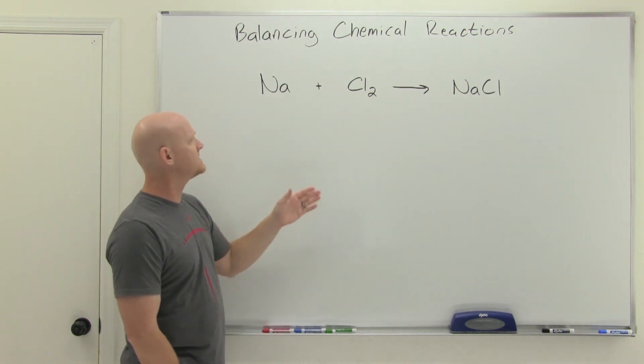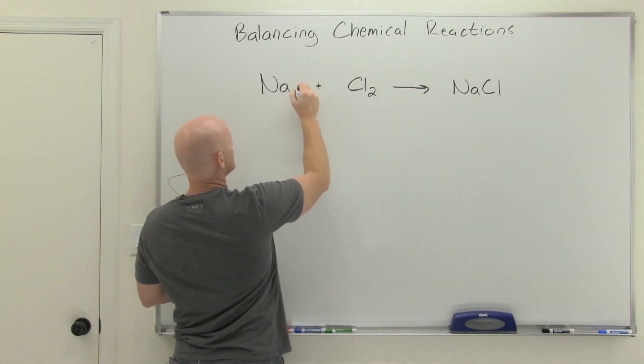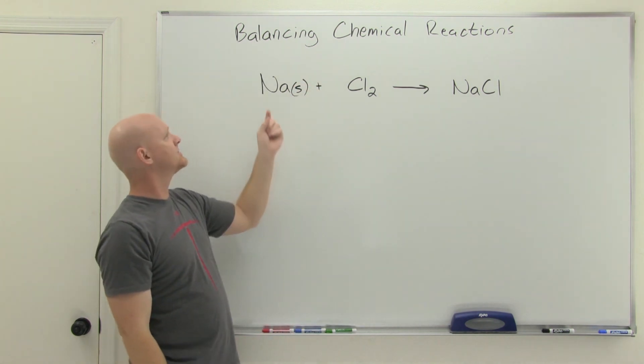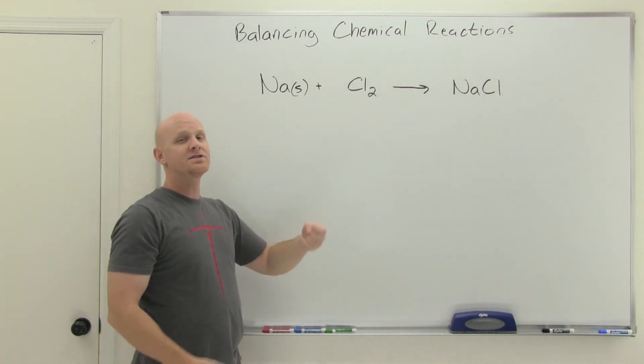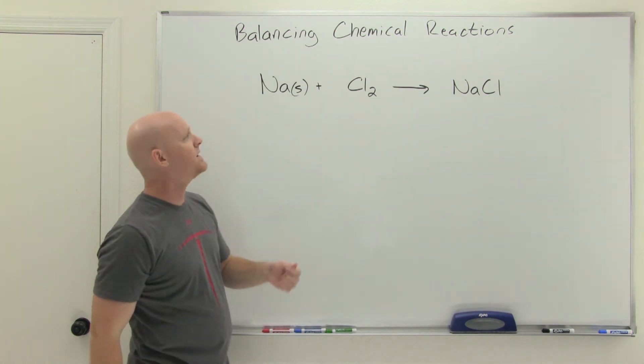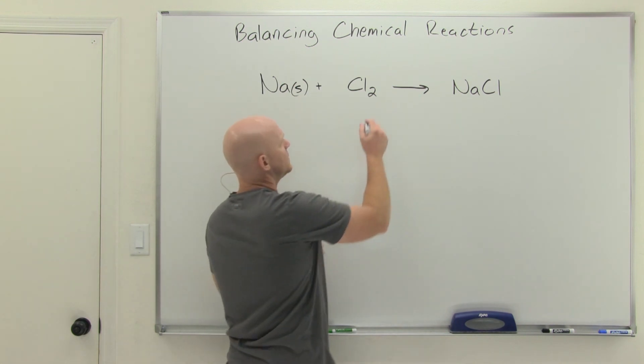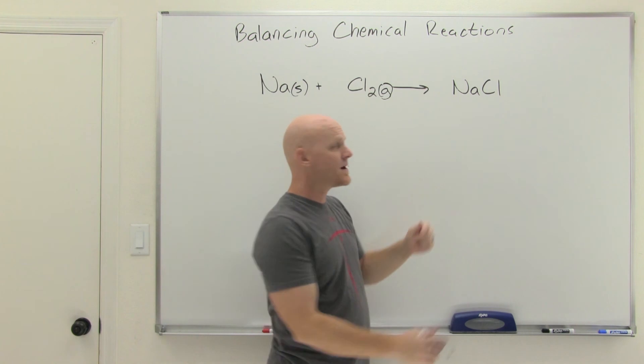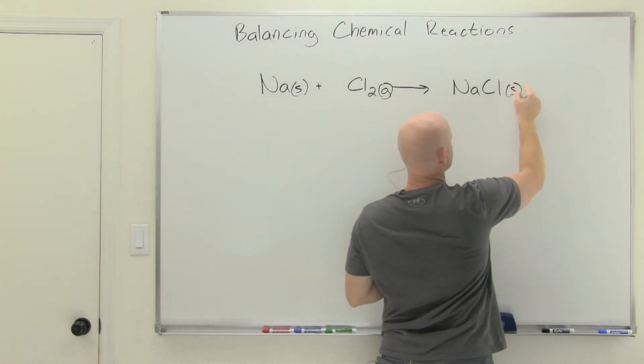So, in this case, we're going to take solid sodium metal. We often put a little phase right after the element or compound to show you what phase it is. It's usually solid, liquid, gas, or aqueous if it's dissolved in water. So in this case, we're going to mix solid sodium metal with chlorine gas and make sodium chloride. In this case, solid sodium chloride, table salt.